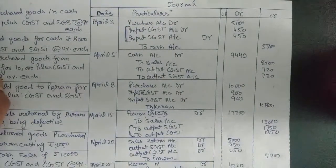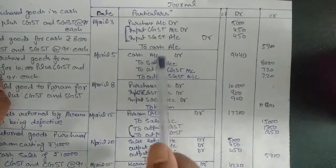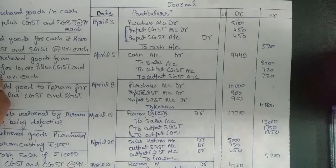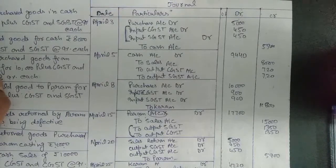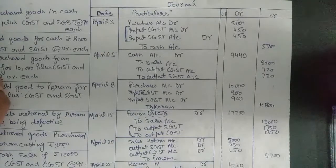In our next video we will discuss the set-off of input and output GST and the implementation of IGST. IGST is for interstate transactions, while CGST and SGST are for intrastate transactions — transactions that happen within the state. Transactions that happen between two states use IGST. We will study how to set off the amounts of input and output for all three — IGST, CGST, and SGST — in our next video.